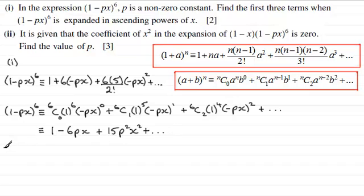Now in the second part, it is given that the coefficient of x squared in the expansion of 1 minus x multiplied by 1 minus px all to the power 6 is 0, and we've got to find the value of p for 3 marks. So again, if you'd like to try this, I'll just give you a moment to pause the video.